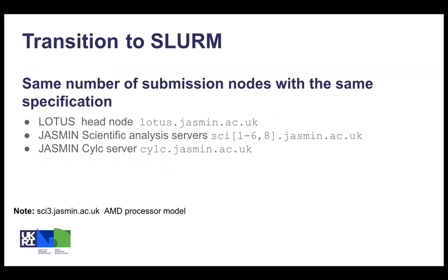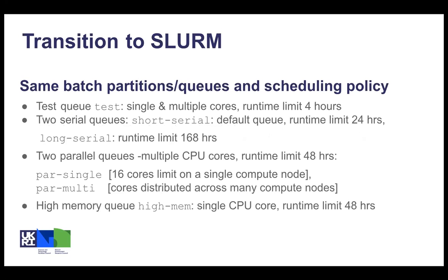During the transition, we kept the same number of submission nodes — those nodes were upgraded to the new operating system. In addition, we provided one node with a different processor model, which is AMD, called node Psi3. We also kept the same number of queues and the same configuration for those queues in terms of time limits and CPU resources to make the transition as easy as possible. The management is now done by SLURM.